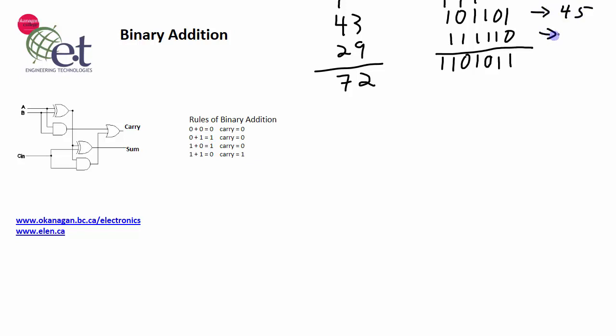The number 111110 is equal to 62. We add these two numbers together and we get 107. And is this the same value? Well, 1 plus 2 plus 8 plus 32 plus 64, you'll find that also adds up to 107. So it checks out. We did the addition correctly.